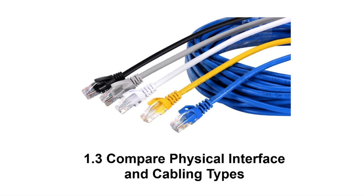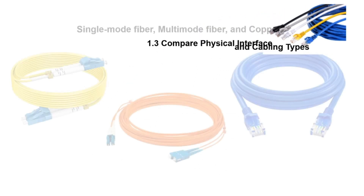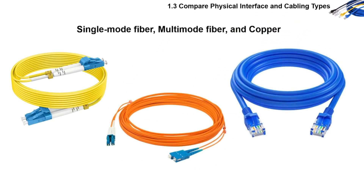CCNA section 1.3 is about comparing physical interface and cabling types. The different cabling types are single-mode fiber, multi-mode fiber, and copper.